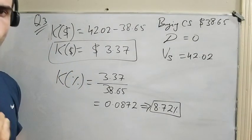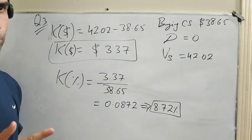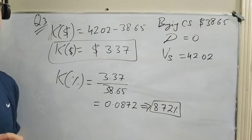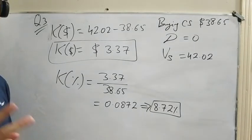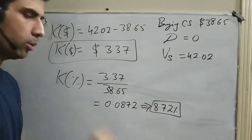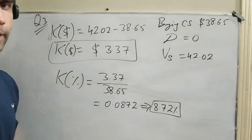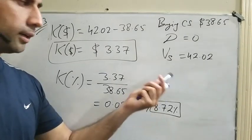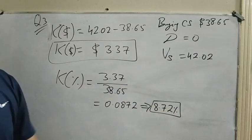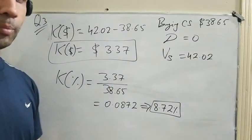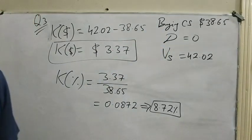To summarize the holding period return section: we've discussed two types — return in dollars and return in percentage. When calculating in dollars, you need two additional pieces of information: size of investment and timing of return. To overcome these issues, we always calculate return in percentage. The 8.72% figure is a quarterly return; multiplying by 4 gives the annualized return, which is independent of the investment amount.